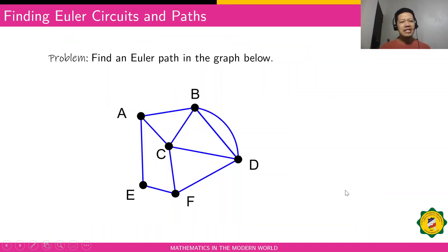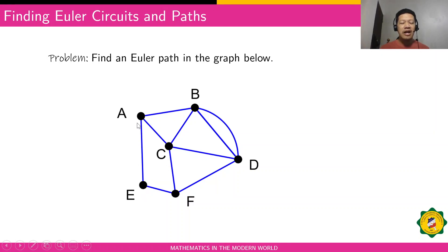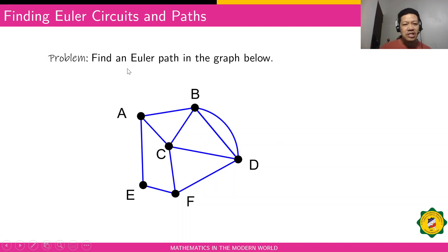Now let's look at another graph to find the Euler path or Euler circuit. First, we determine whether there's an Euler path by counting the odd-degree vertices — there should be exactly two. The degree of A is 3, B is 4, D is 4, C is 4, F is 3, and E is 2. There are exactly two odd vertices: vertex A with degree 3 and vertex F with degree 3. Therefore, this graph has an Euler path.